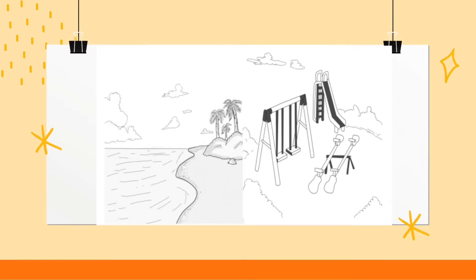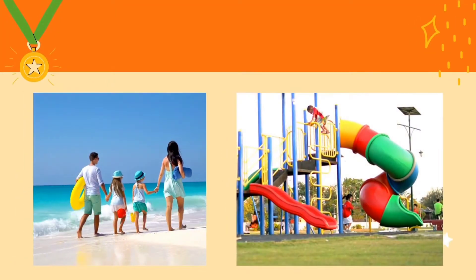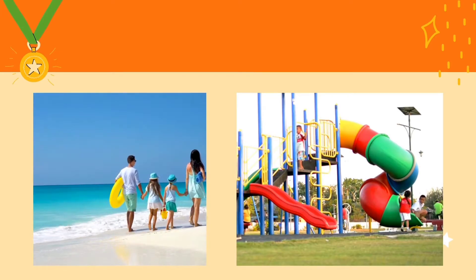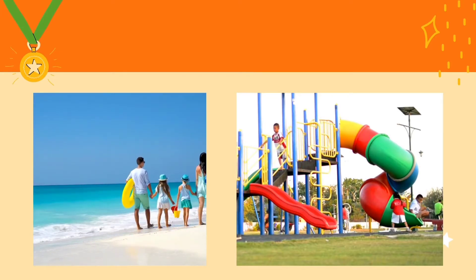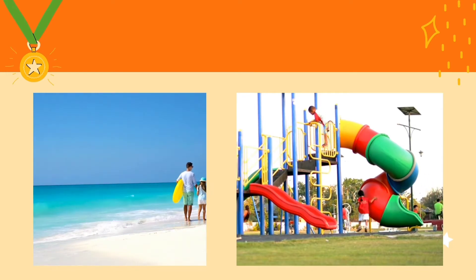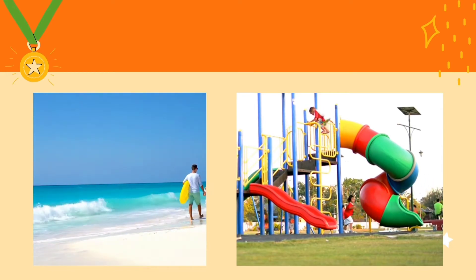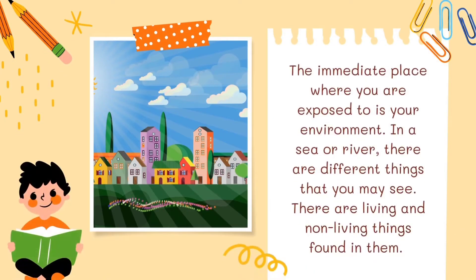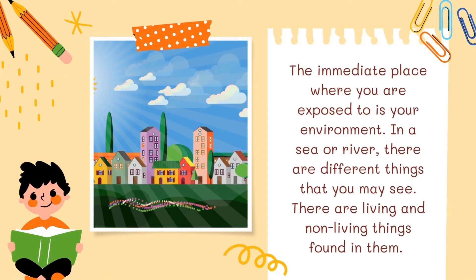Observe the picture. Is the place clean? Have you seen places like these in your community or in other places that you have been? You probably have spent time with your friends and other relatives swimming or playing in a clean and safe playground before the pandemic occurred. Have you enjoyed your activities in this kind of place? The immediate place where you are exposed to is your environment.